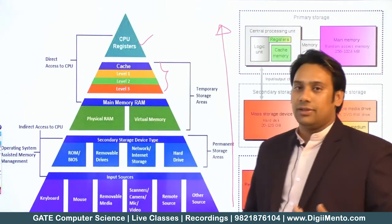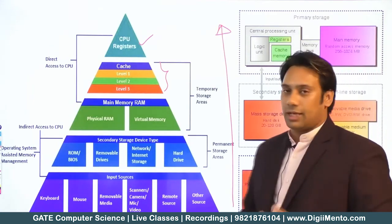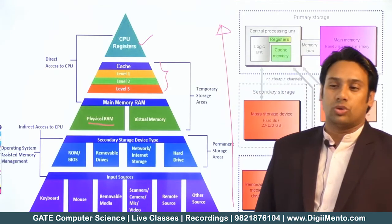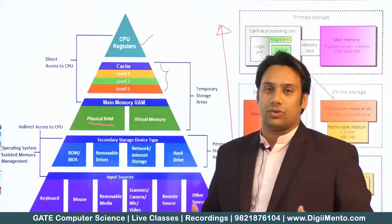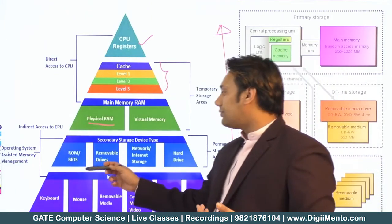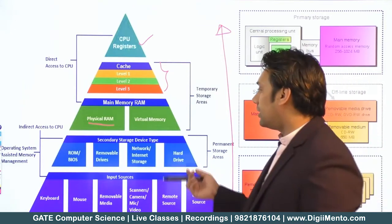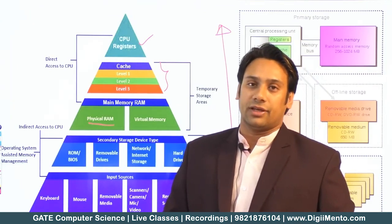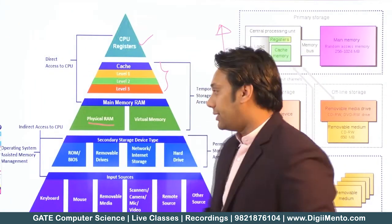And then you have this main memory — main memory means your RAM. We divide main memory into two categories: one is your total amount of physical RAM, and then we also have a virtual memory. After this we have some secondary memories — hard disk drive, network storage drive, CD drives, DVD drives, solid state drives — all of these come under the category of secondary memory. These are your permanent storage.